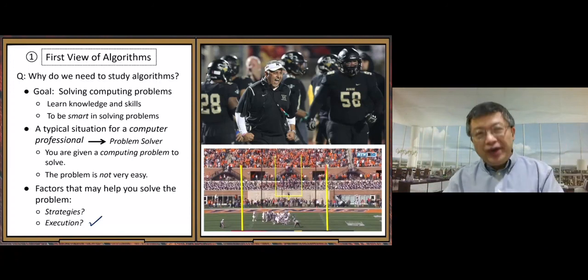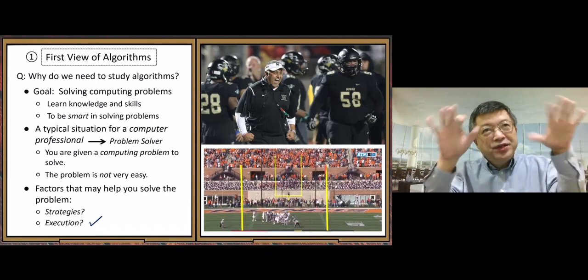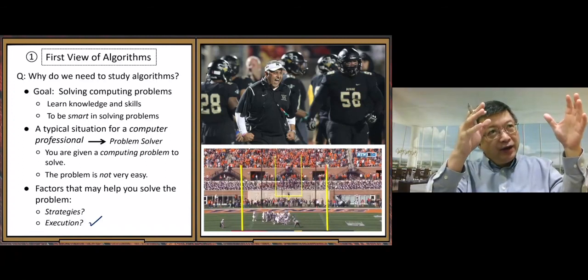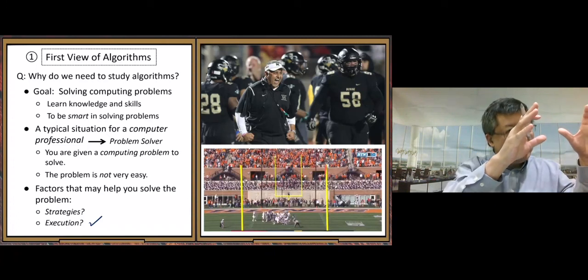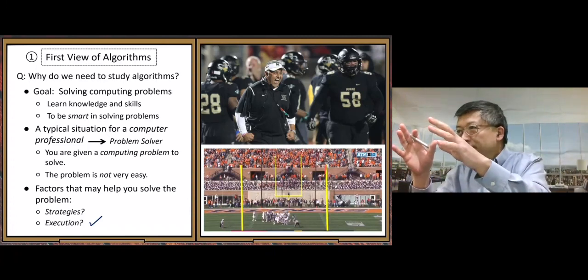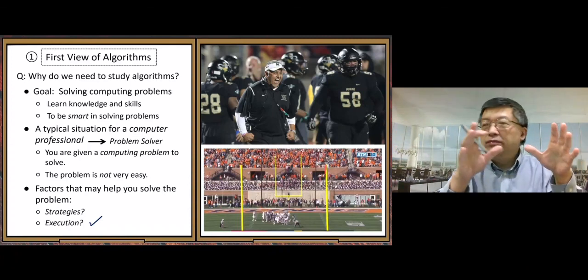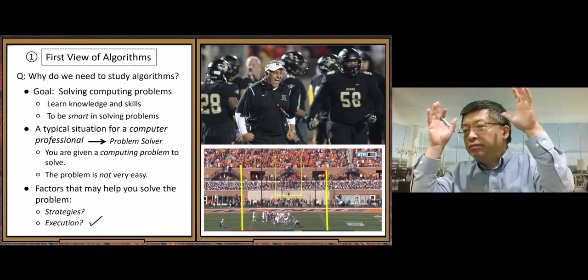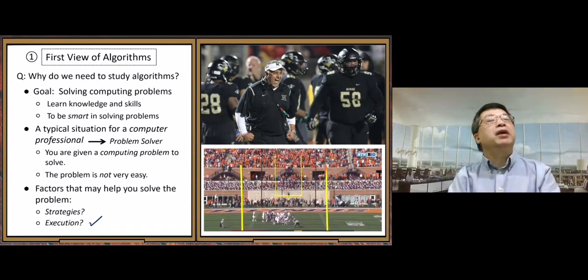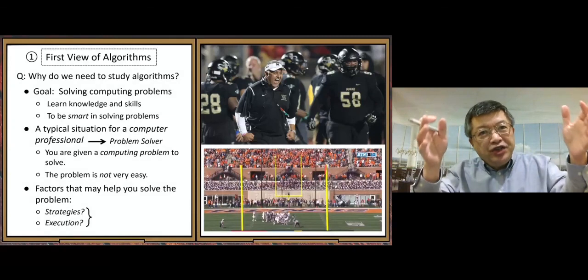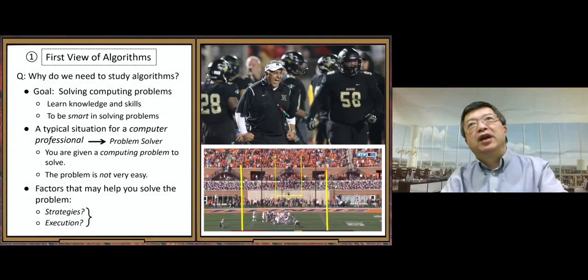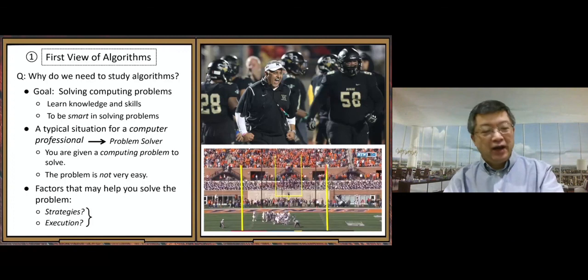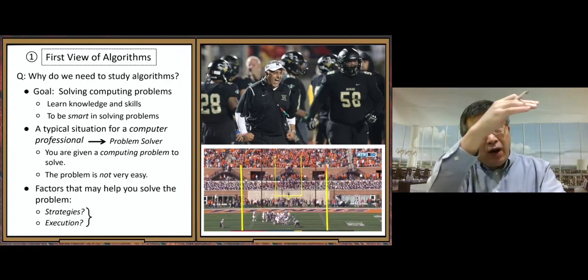So at this point, we understand from the high level, we know these two factors, very important, strategies and execution. And we move this result to our algorithms. To be successful, to develop an algorithm, we need strategies. After we have the strategies, we also need good execution to make it happen. After we get strategies and executions, then how close do we get an algorithm?